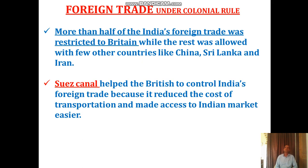More than half of India's foreign trade was directed only toward Britain — only England. Some trade existed with other countries like China, Sri Lanka, and Iran, but the volume was also very low. The Britishers built a canal called the Suez Canal, which helped them control India's foreign trade because it reduced the cost of transportation and made access to the Indian market easier.